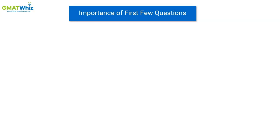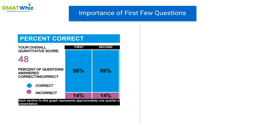Looking at the ESR of the first student, this person scored a 48 on Quant, which is a pretty good score. They got 86% accuracy in the first quarter and 86% accuracy in the second quarter. Each quarter on GMAT represents seven questions, so basically this student got one question wrong in the first quarter and one question wrong in the second quarter.